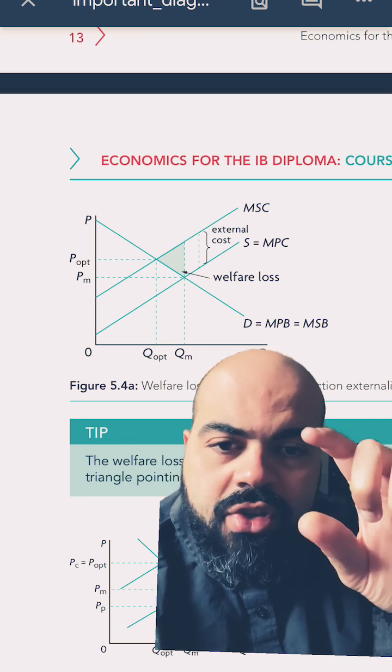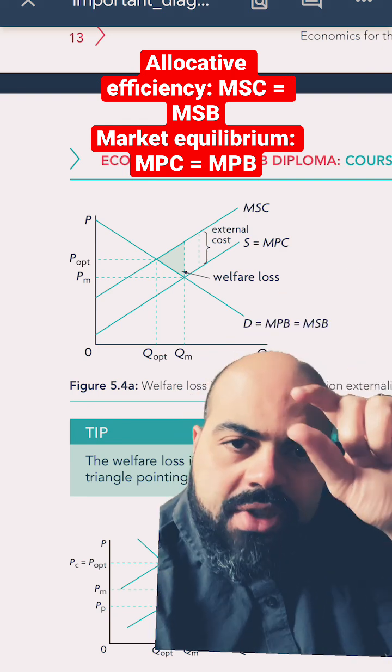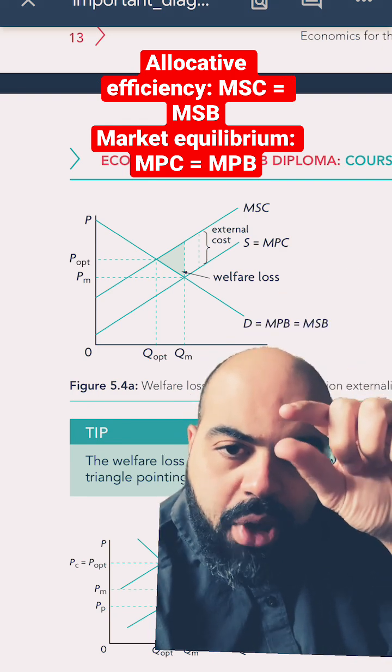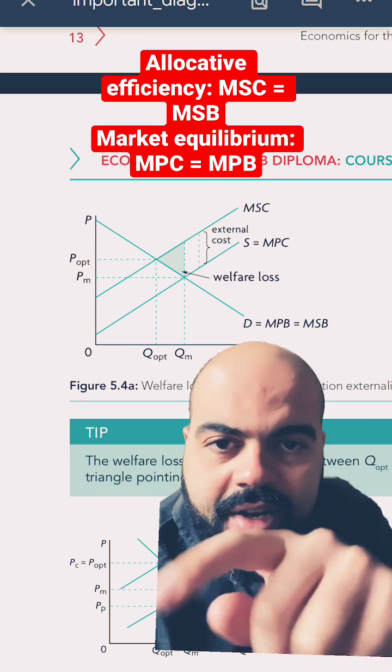Where's the problem? Well, the external cost makes the MSC higher than the MPC. The vertical distance between the two positively sloping curves is the external cost, and the welfare loss is shaded in the diagram.